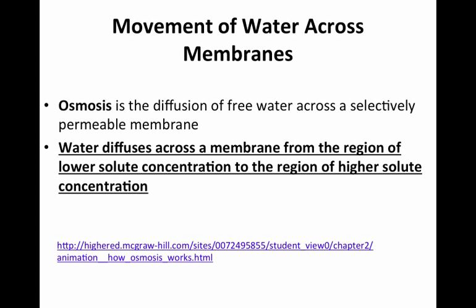We're discussing the movement of water across membranes. So what is osmosis? Oftentimes you hear that people are learning by osmosis — putting books on top of their head and hoping the information just diffuses in. Of course, that is not how it works, but osmosis really is the diffusion of free water across a selectively permeable membrane. We've already discussed what selective permeability is.